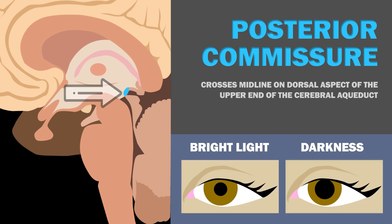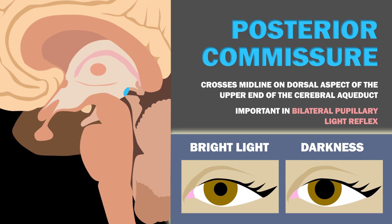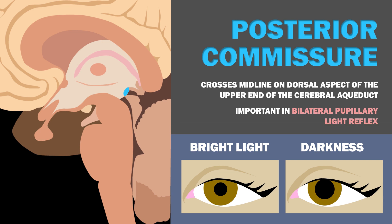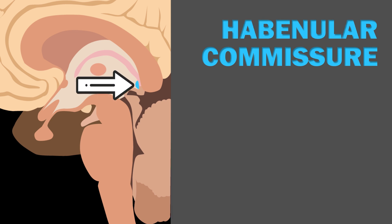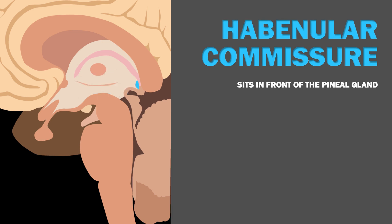The posterior commissure crosses the midline on the dorsal aspect of the upper end of the cerebral aqueduct, and it is important in the bilateral pupillary light reflex, which makes your pupil size change depending on the amount of light.